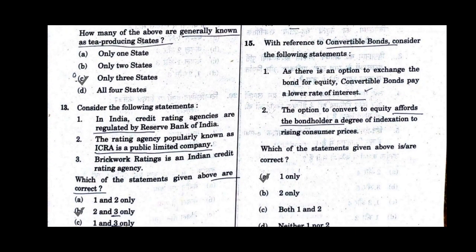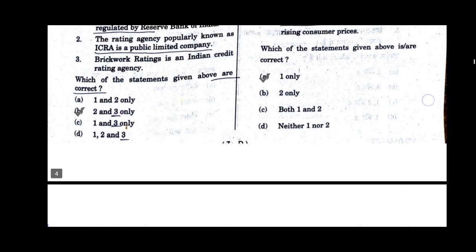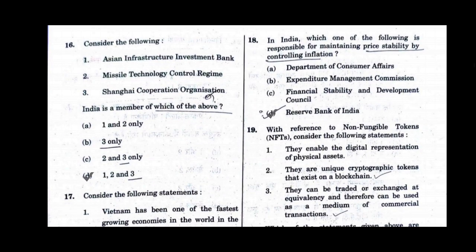Question number 15. With reference to convertible bonds, consider the following statements. Which of the statements given above are correct? Option A will be the correct answer: only 1. Question number 16. Consider the following — Asian Infrastructure Investment Bank, Missile Technology Control Regime, Shanghai Cooperation Organization. India is a member of which of the above? Option D will be the correct answer: 1, 2 and 3. India is a member of all the above three organizations.